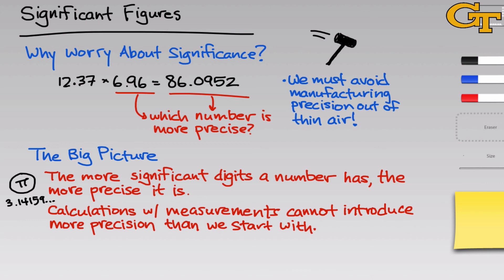But calculations that use measurements that have limited precision, like 6.96 with only two digits after the decimal place, cannot introduce more precision than we start with. This is tantamount to lying. It's lying about our knowledge of the precision of the result of a calculation just because we've run that calculation. We haven't increased the precision of any of our measurements. This is really the most important thing to keep in mind when using significant figures. Calculations with measurements cannot introduce more precision than we start with.